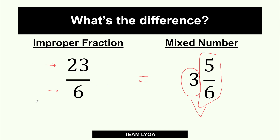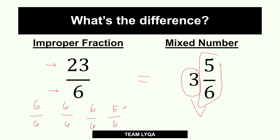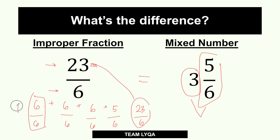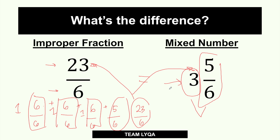In order to understand this better, every 6 over 6 equals 1. So in 23 over 6, you have one 6 over 6, another 6 over 6, another 6 over 6, and the remainder is 5 over 6. If you add them all: 6 plus 6 plus 6 is 18, plus 5, that's 23 over 6. So each group of 6/6 becomes 1 whole — giving you 3 whole numbers and 5 over 6. It's actually the same.